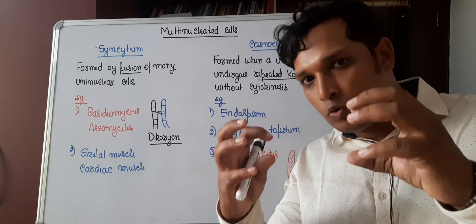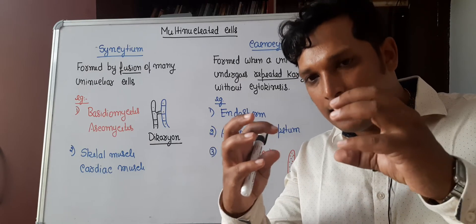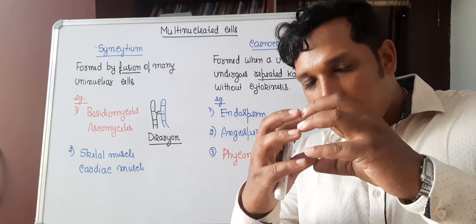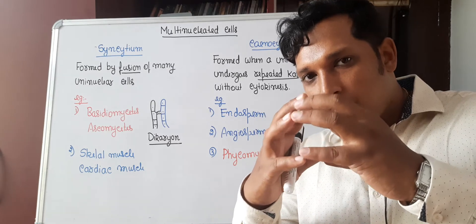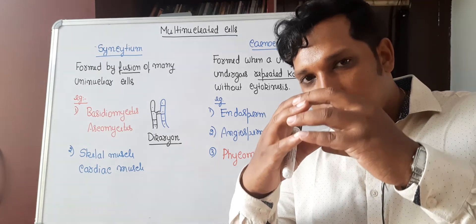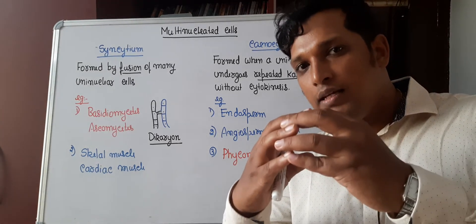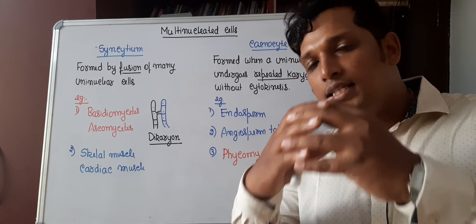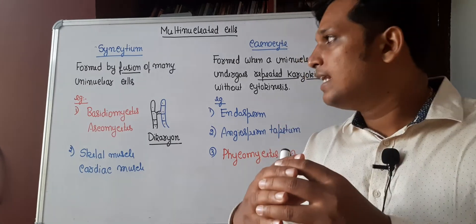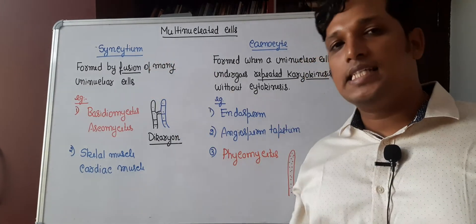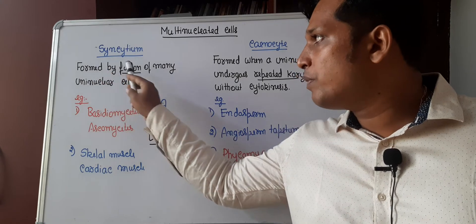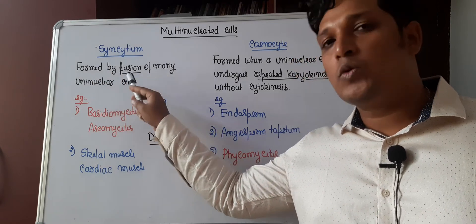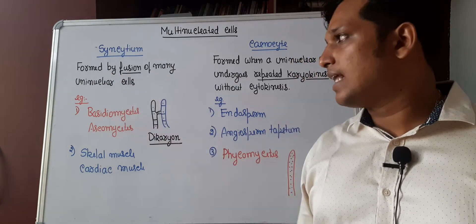What is syncytium? When two cells, each having a single nucleus — called uni-nucleate cells — fuse with each other, the resultant cell will have many nuclei. Such a multi-nucleated cell is called a syncytium. So it is formed by the fusion of many uni-nucleate cells.